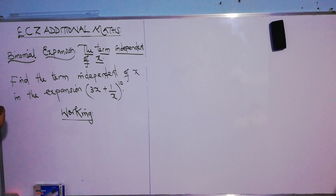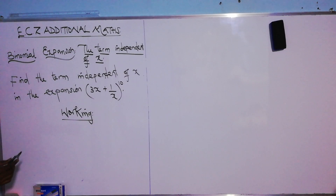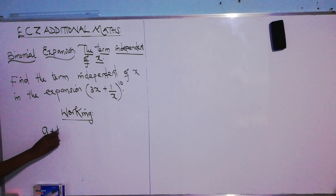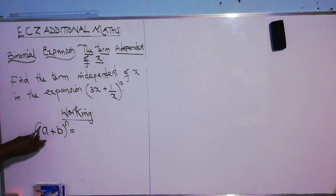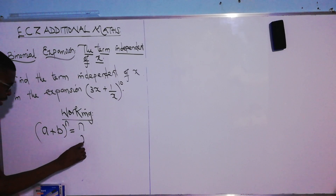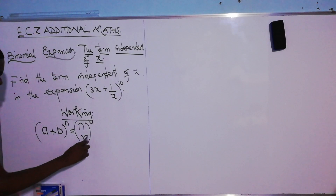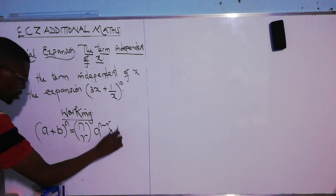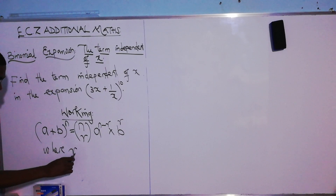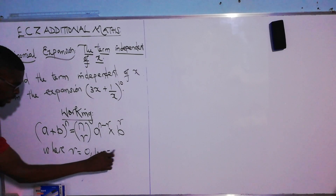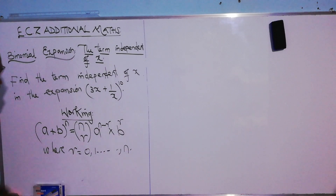To solve this question, remember that each and every term of a binomial expansion given in the general form — (a + b) to the power n, where n is the power of the binomial expression — any term of this expansion can be obtained by the formula: nCr times a to the power (n minus r) times b to the power r, where r equals 0, 1, and so on up to n.